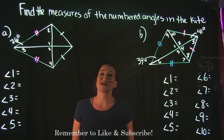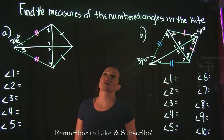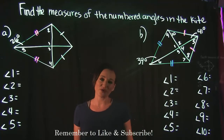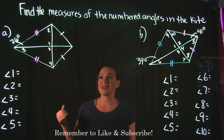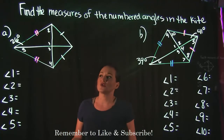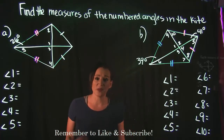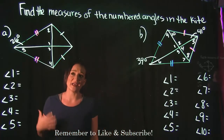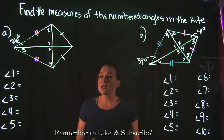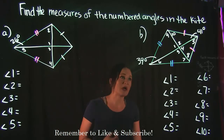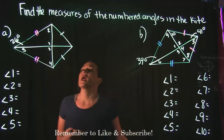This video focuses on how to find the measure of numbered angles when given a kite. We're going to go through two examples here, both example A and B, which are kite-shaped figures. Some important things to know about kite-shaped figures coming up.